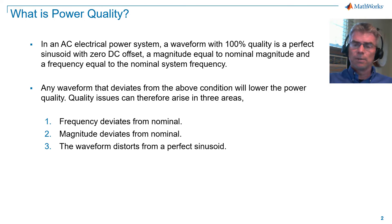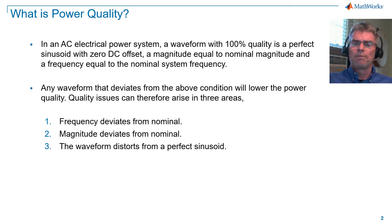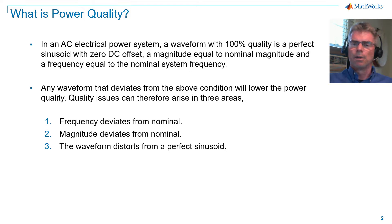The frequency deviates from nominal, magnitude deviates from nominal, or the waveform distorts from a perfect sinusoid. I'll show examples of the first two points, and I will spend a little more time on point 3, as this is where we consider harmonic analysis.